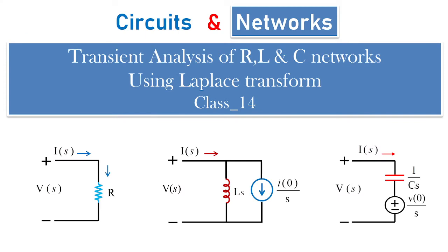Welcome to another session of circuits and networks. In today's transient analysis class, we are going to see the transient analysis of resistor, inductor and capacitive networks using Laplace transform. This particular class we are going to treat as class 14. Here you can see the different varieties of passive elements, and how the Laplace transform is applied to these passive elements to obtain the transient current equation is our main concern.